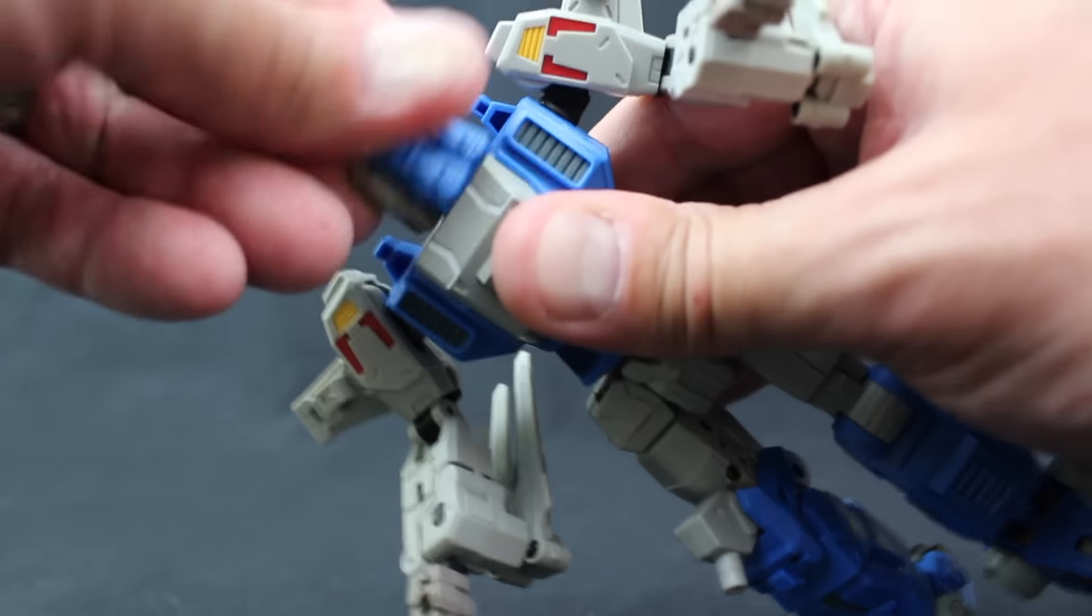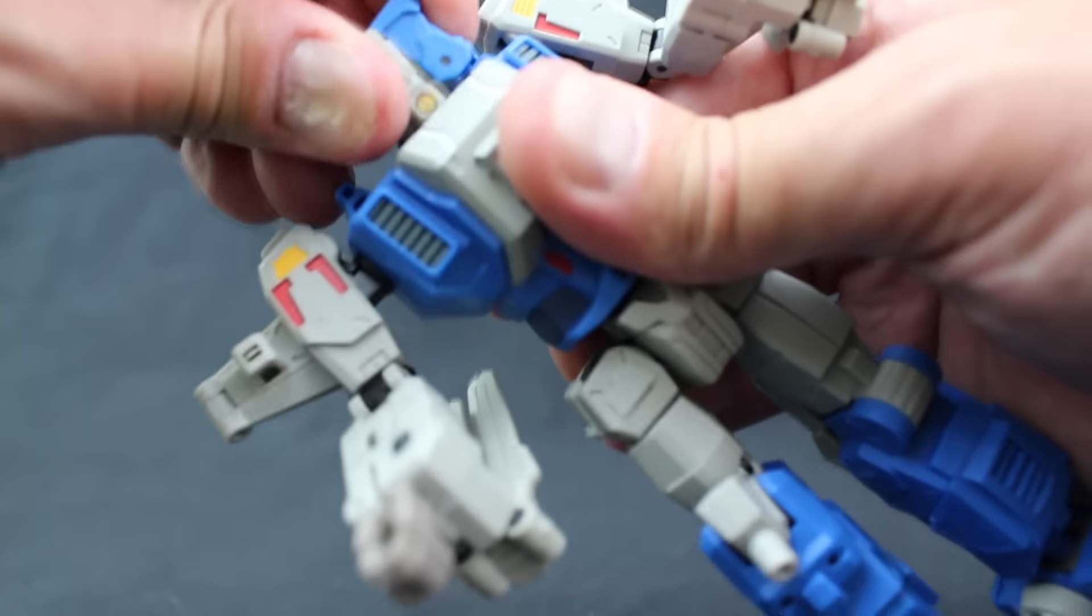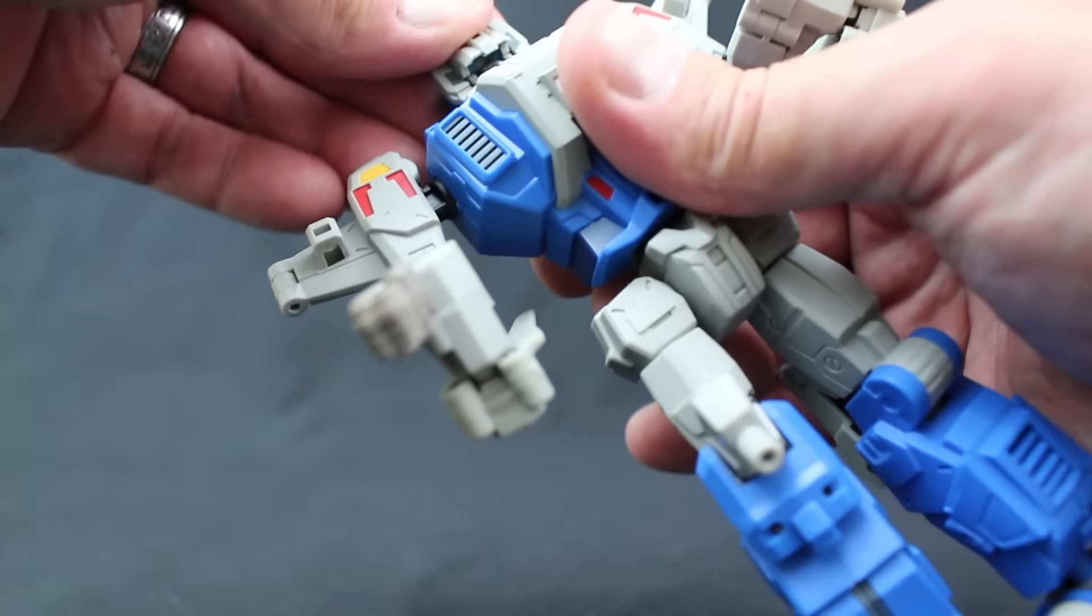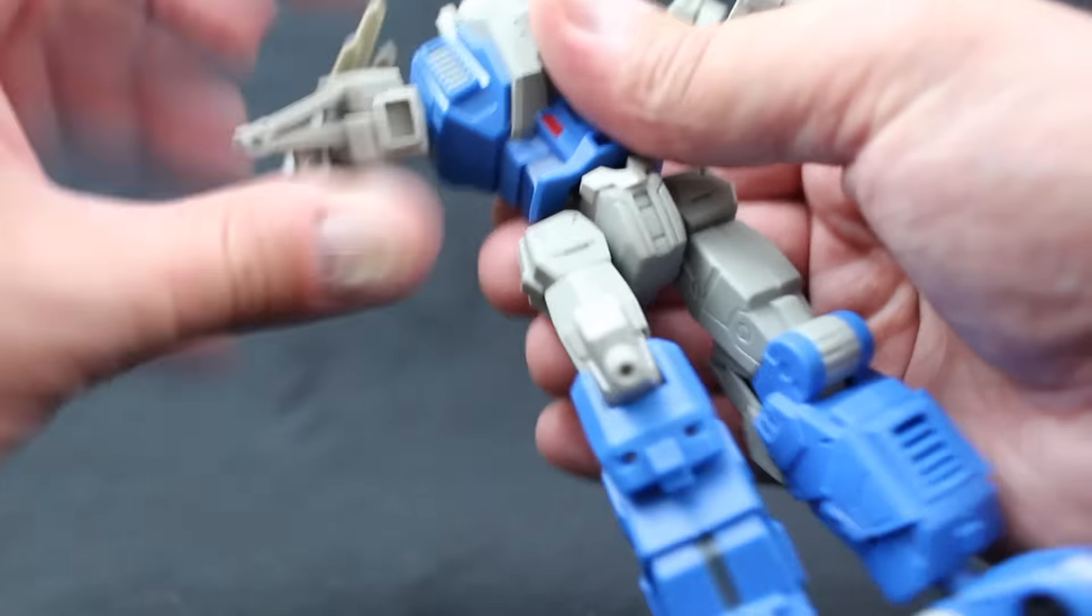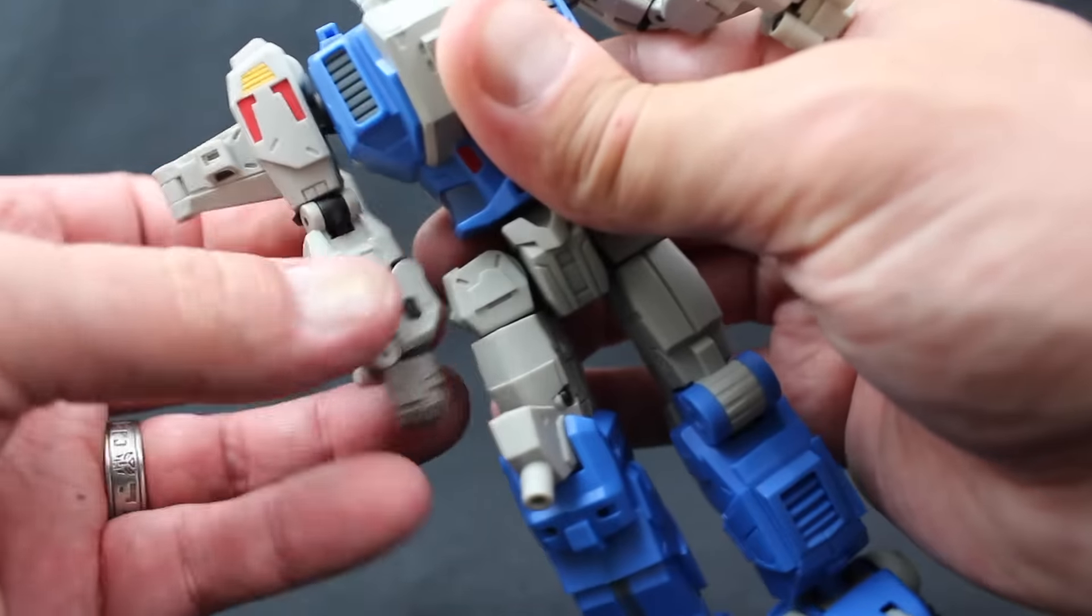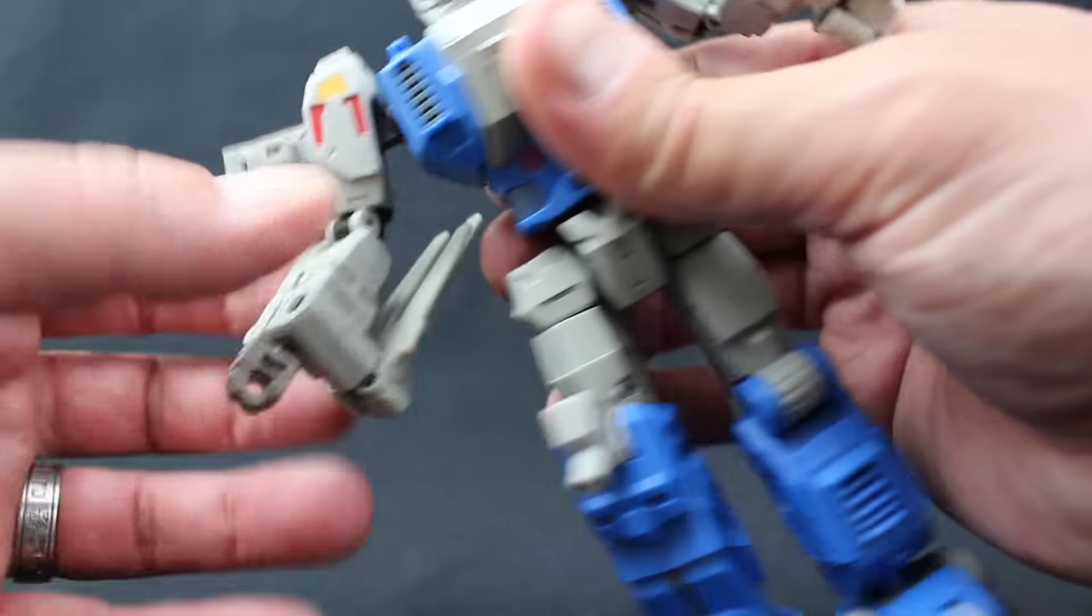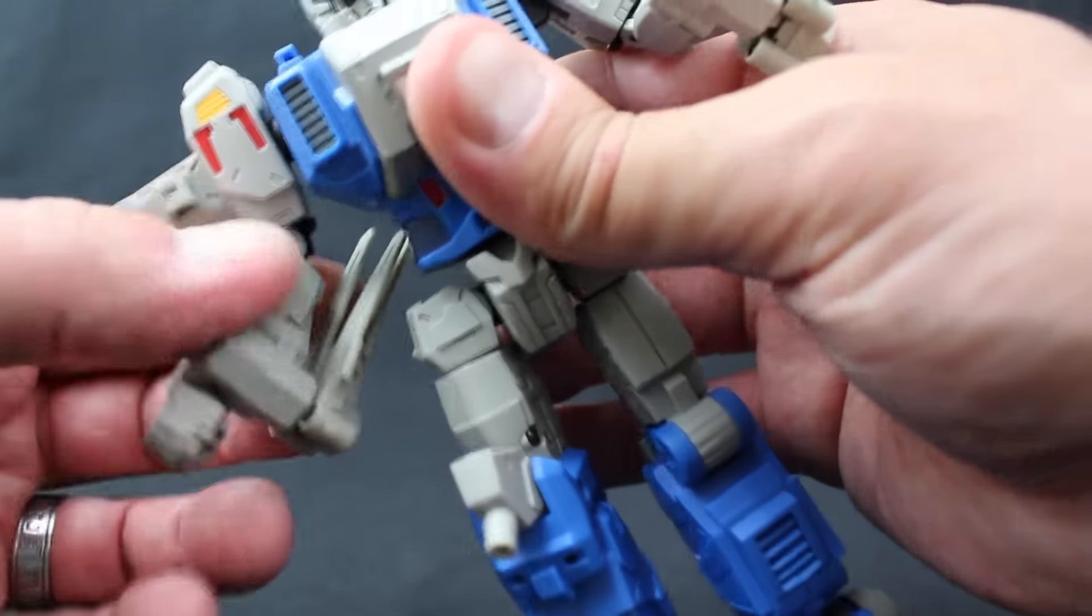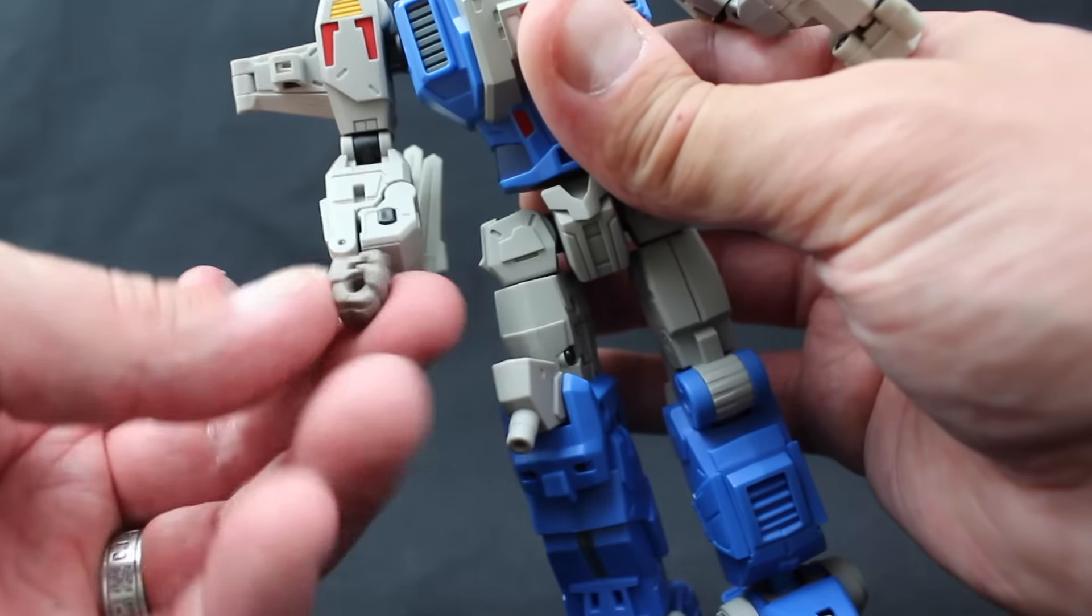The head can be rotated 360 degrees. The shoulders are on ratchets and rotate completely around and also have outward motion. There is a bicep swivel and an elbow on a hinge. The fist can be rotated 360 degrees, but there is no hand or finger articulation.